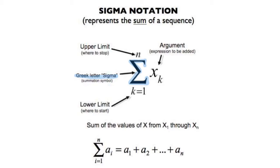The next part of summation notation is the lower limit — this bottom part right here, the K equals 1. What that means is: where are we going to start? So what number are we going to start with when we are finding the sum of a sequence? Which term number are we going to start with?